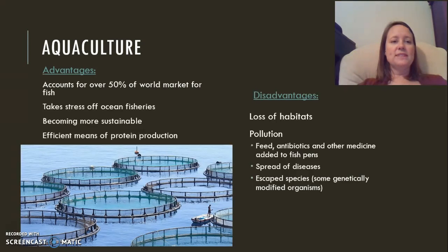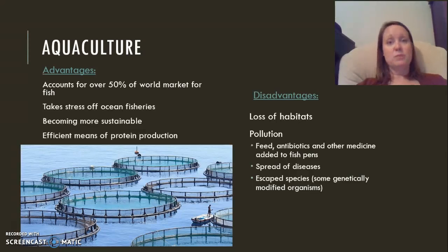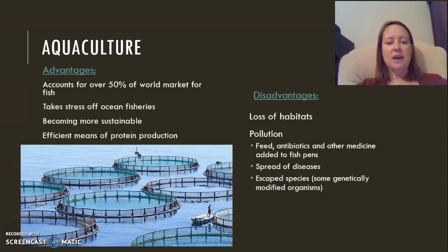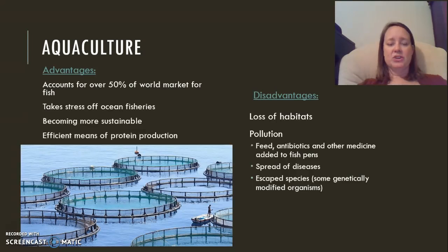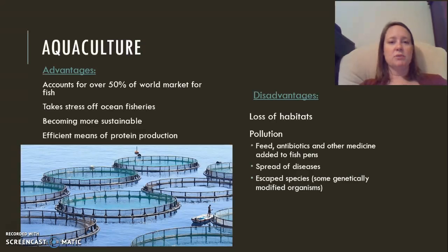Aquaculture accounts for over 50% of the world market for fish right now, which takes stress off ocean fisheries. It is becoming more sustainable and is an efficient means of protein production compared to beef or terrestrial livestock. However, there are disadvantages: loss of habitats, pollution from feed and antibiotics added to pens that leach into the open ocean, diseases that spread quickly due to crowding, and the risk that farmed fish — often genetically modified — may escape and breed with wild fish, creating problems in the open ocean.